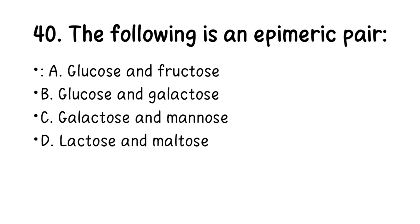Number 40. The following is an epimeric pair: A. Glucose and fructose, B. Glucose and galactose, C. Galactose and mannose, D. Lactose and maltose. Glucose has two epimers: galactose and mannose. The right answer is B, glucose and galactose.